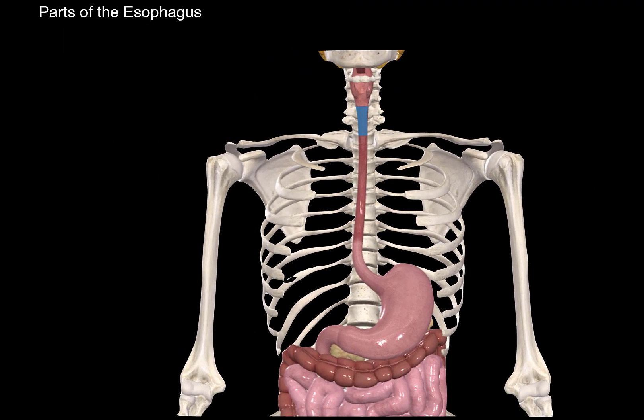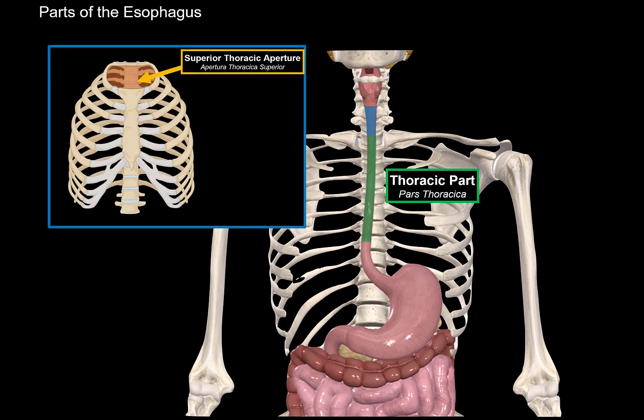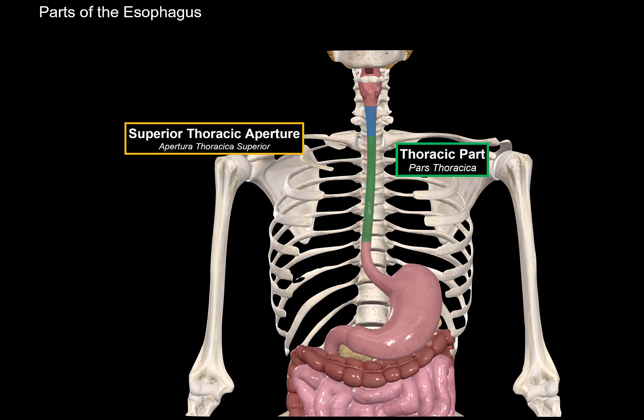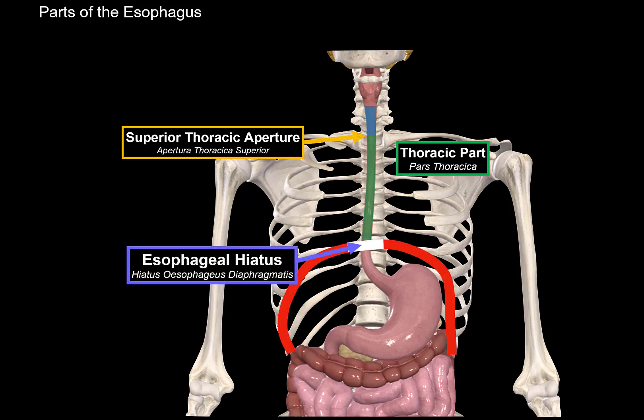After the cervical part is the thoracic part. This one starts at the superior thoracic aperture and goes all the way down until it pierces the diaphragm. The area at which the esophagus pierces the diaphragm is called the esophageal hiatus. So the thoracic part starts at the superior thoracic aperture and ends at the esophageal hiatus.